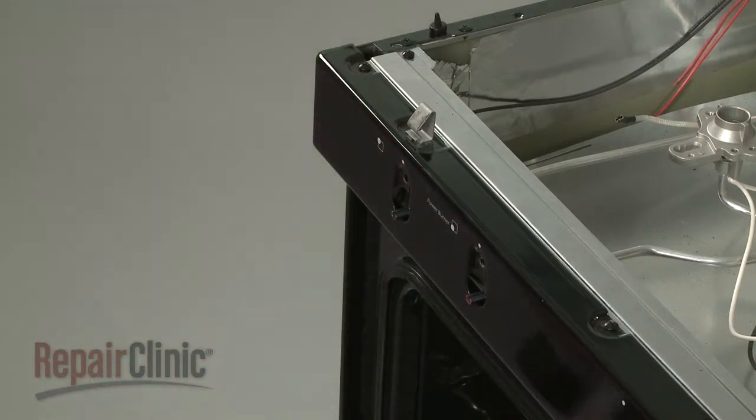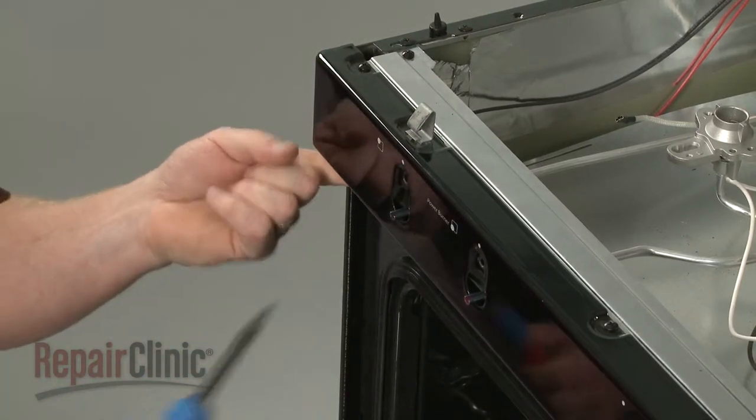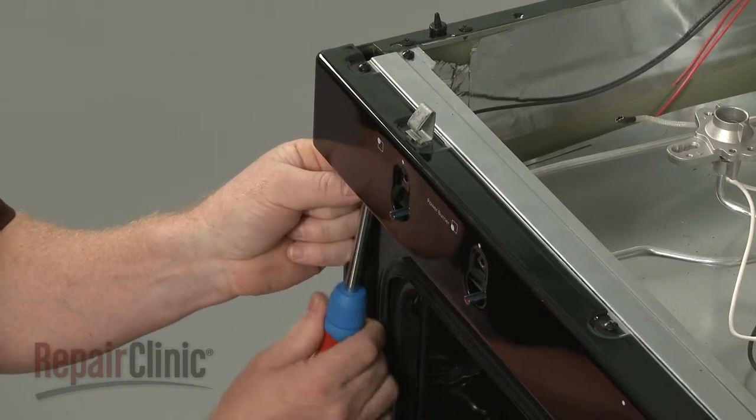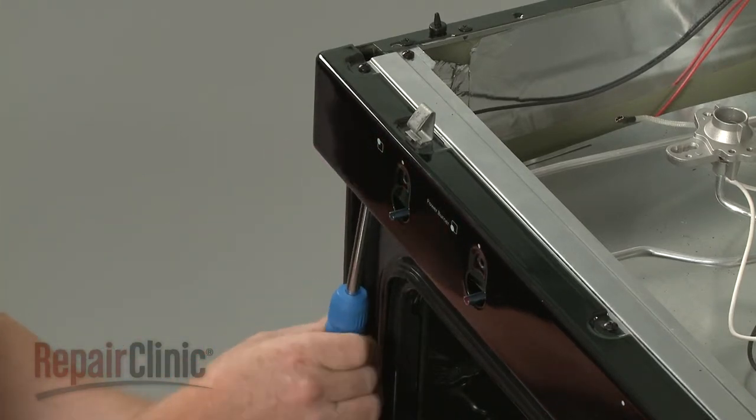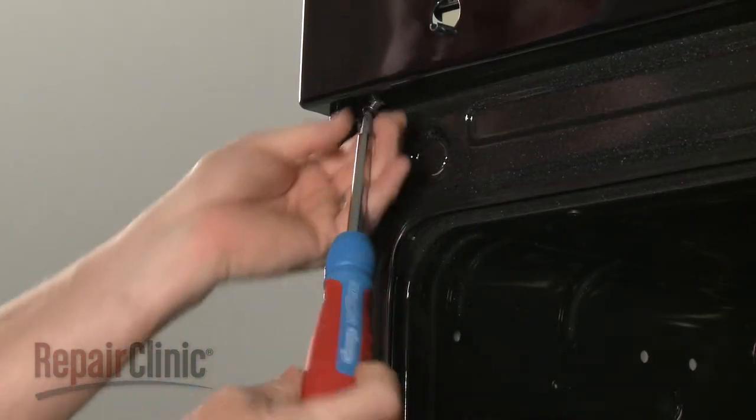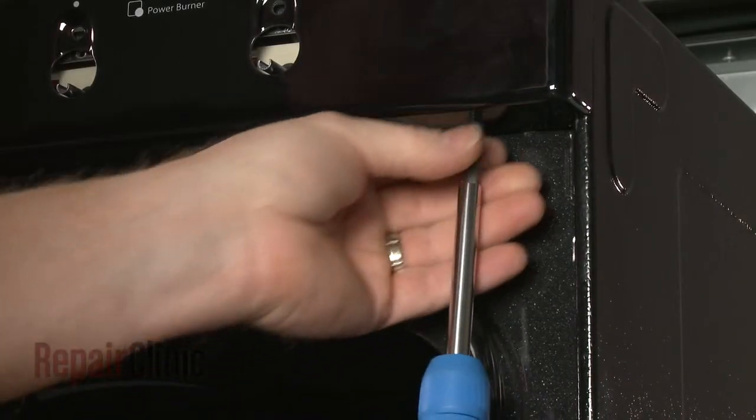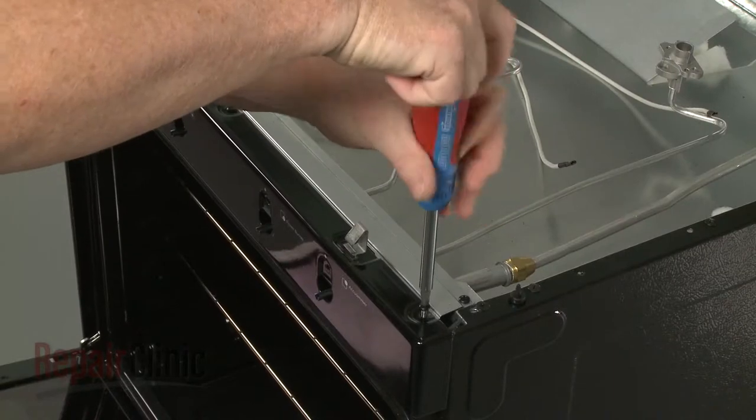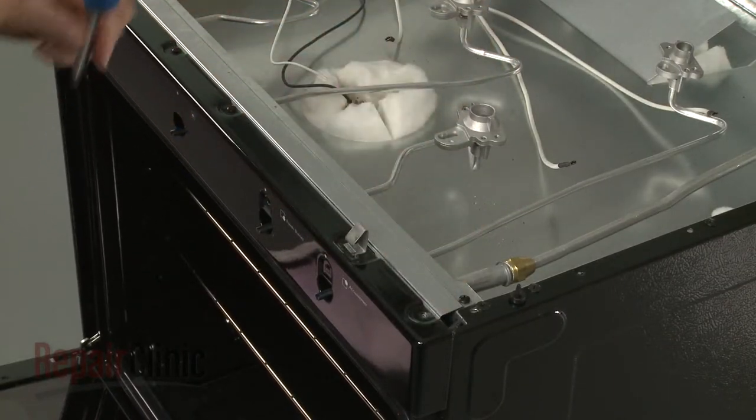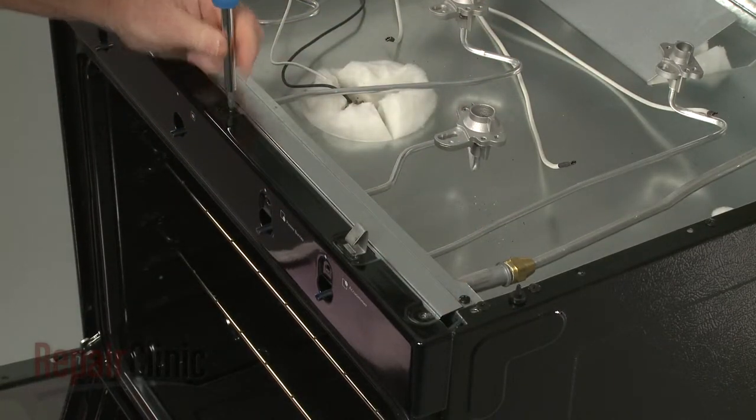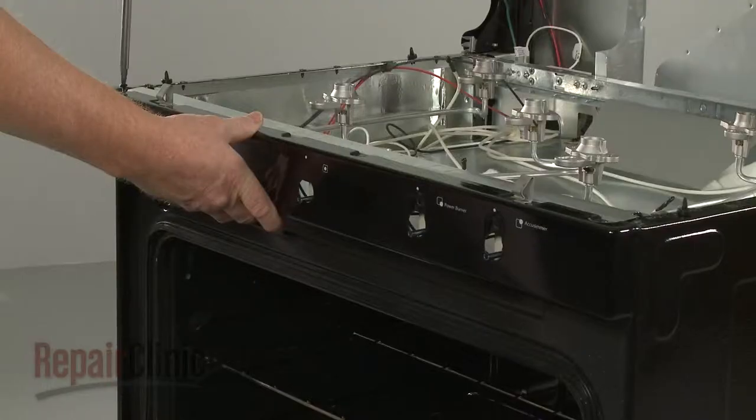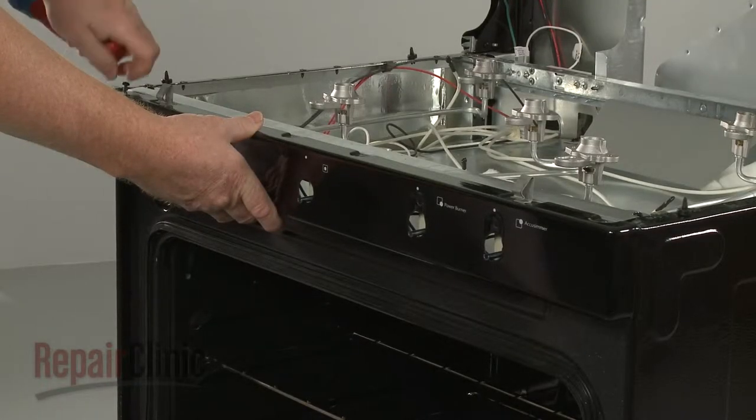Open the oven door and remove the screws securing the bottom of the manifold panel. Now remove the screws on top. Set the front manifold panel aside.